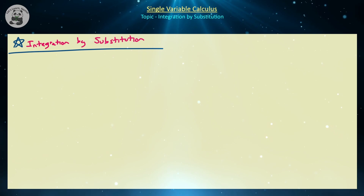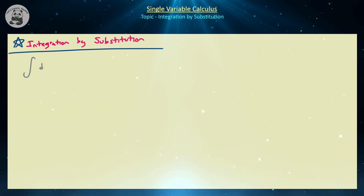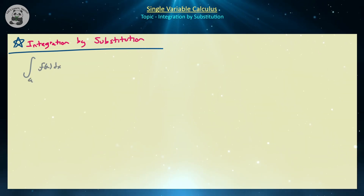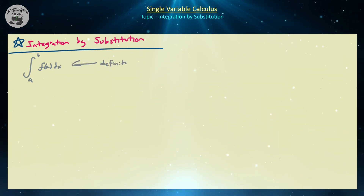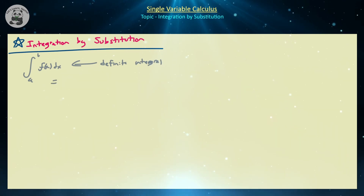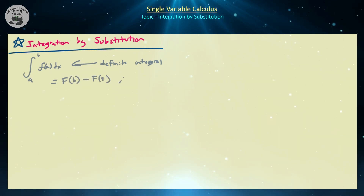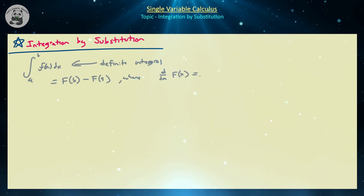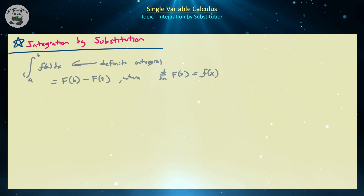Let's go over a couple basics that you definitely should know before proceeding. The integral of f dx from a to b — this is what we refer to as a definite integral — and we know that it's going to be equal to capital F of b minus capital F of a, where the derivative of capital F of x is equal to little f of x, where capital F is known as the antiderivative.